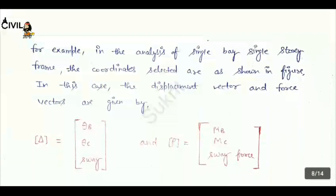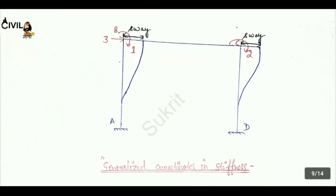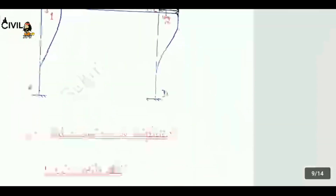For example, in the analysis of a single-bay single-story frame, the coordinates selected are as shown in the figure — directions 1, 2, and 3. In this case, the displacement vector is given by theta_B, theta_C, and sway, and the force vector is given by M_B, M_C, and the sway force. This represents the generalized coordinates in the stiffness matrix approach.